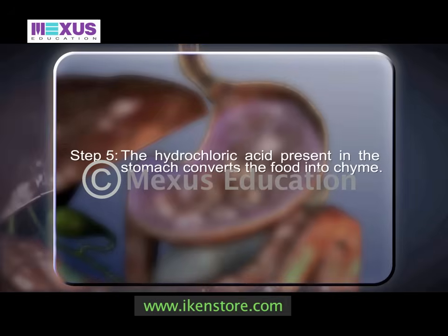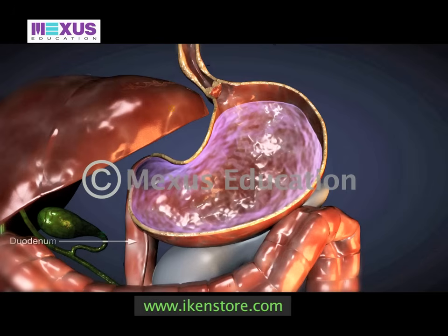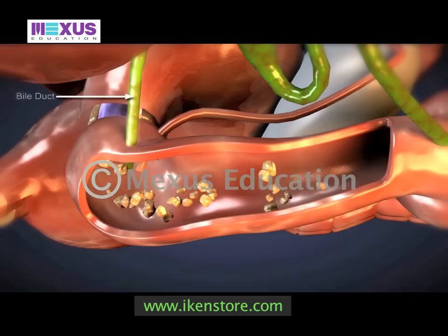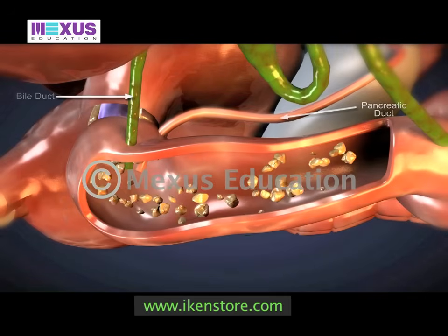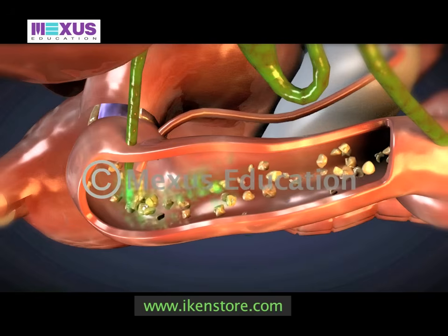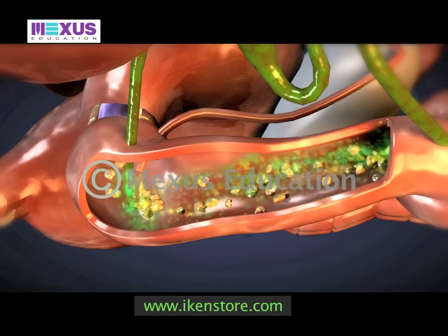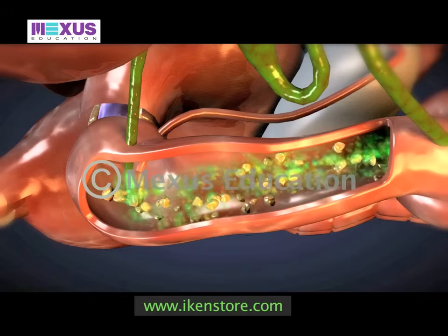This chyme exits the stomach through the pyloric sphincter and enters a part of the small intestine known as the duodenum. The bile duct from the liver and gall bladder and the pancreatic duct from the pancreas release secretions into the duodenum. The bile helps in breaking down fats and the pancreatic juice breaks down other food particles, aiding in the further digestion of food.